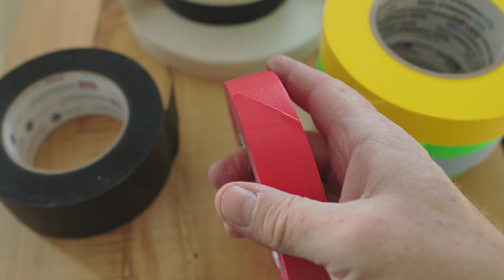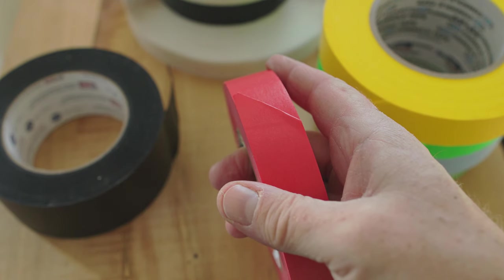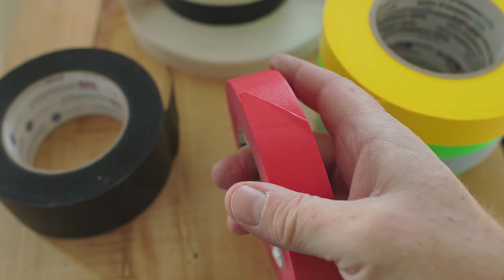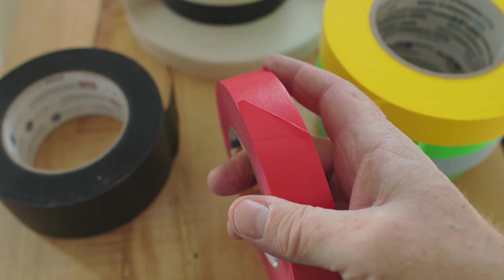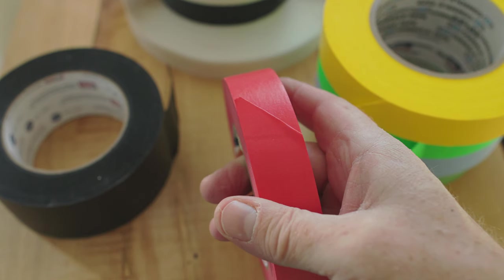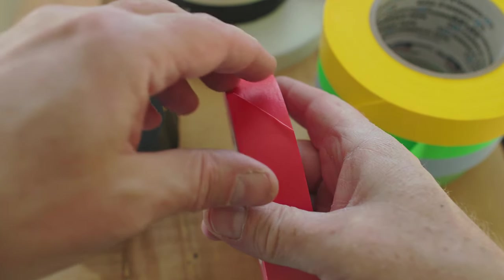And when you pull the next piece of tape off that roll, the tab will be on the piece you pull off. And if you use the same technique, you'll be leaving a tab behind on the roll for the next piece you pull off, and so on.